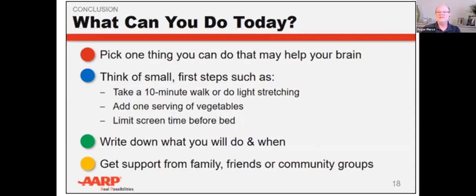Aging studies consistently point to a few fundamental qualities of a brain-healthy lifestyle. The overall message is to stay active mentally, physically, and socially, with special attention to a healthy diet, good sleep, and stress reduction. Start with small steps and try to do something every day — try writing out what you will do and when you will do it.